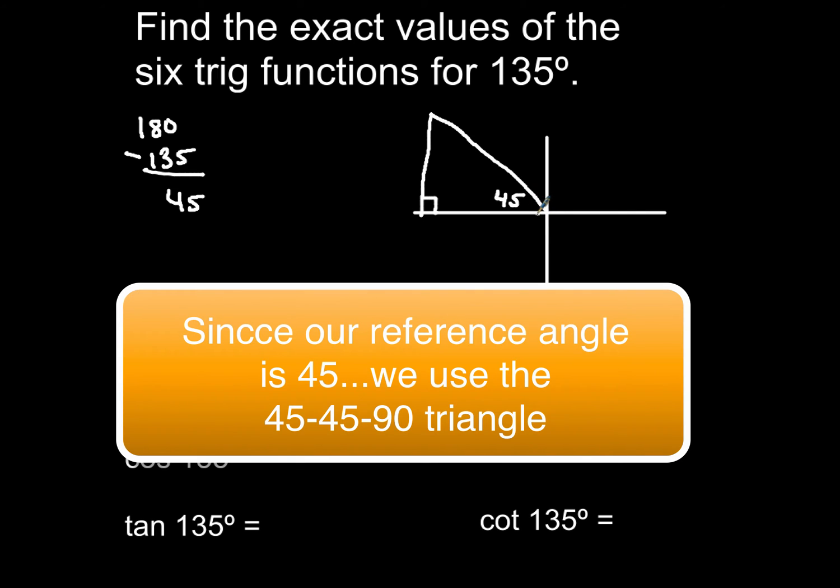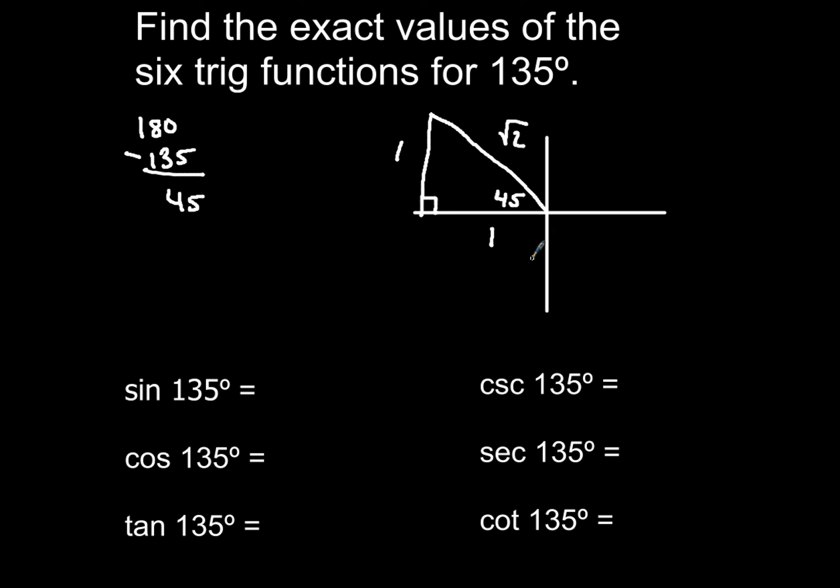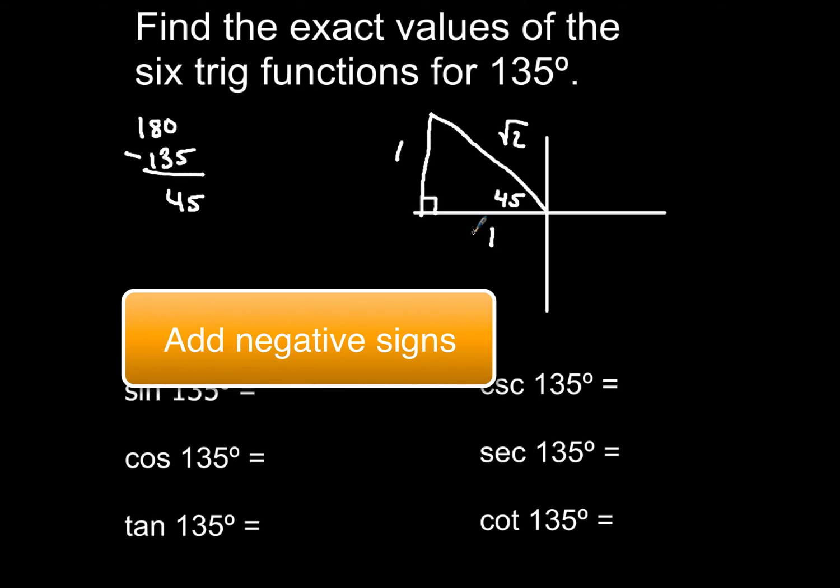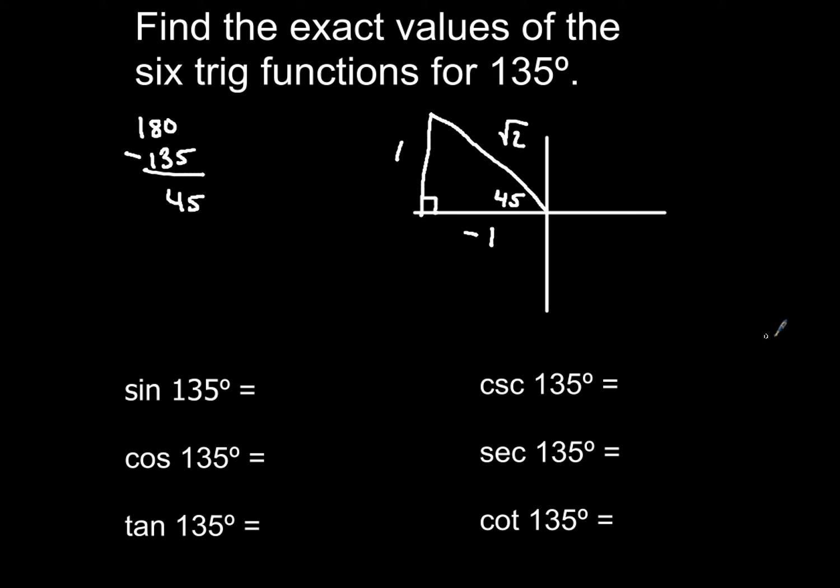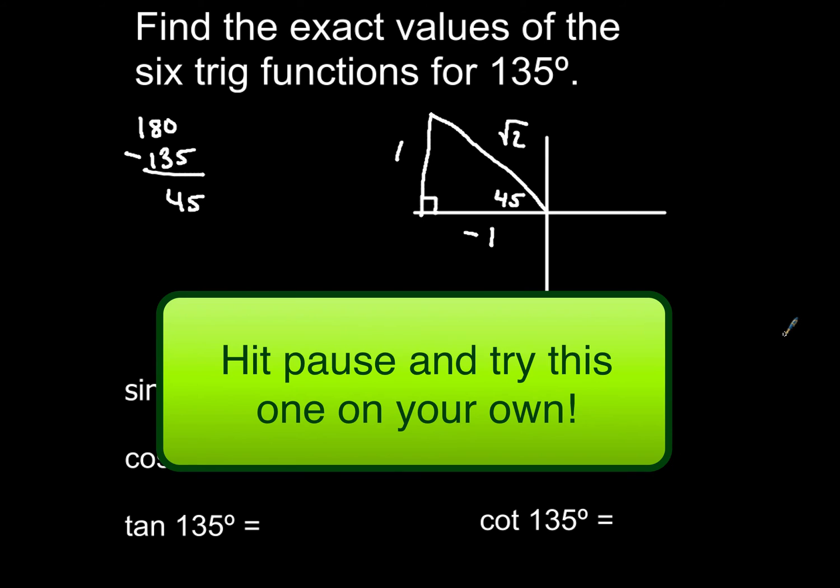Now the 45-45-90 triangle, both of my legs are 1 and my hypotenuse was square root of 2. Now I've got to make an adjustment here because this 1 on the x-axis, that has to be negative so I'm going to add a negative sign, the y I don't have to do that for. And then from here, it's an easy job. All you have to do is set up your trig ratios for sine, cos, tan, cosecant, secant, and cotangent, and you're done. So go ahead and do that, rationalize if you need to, and then come on back and see if you got the correct answer.